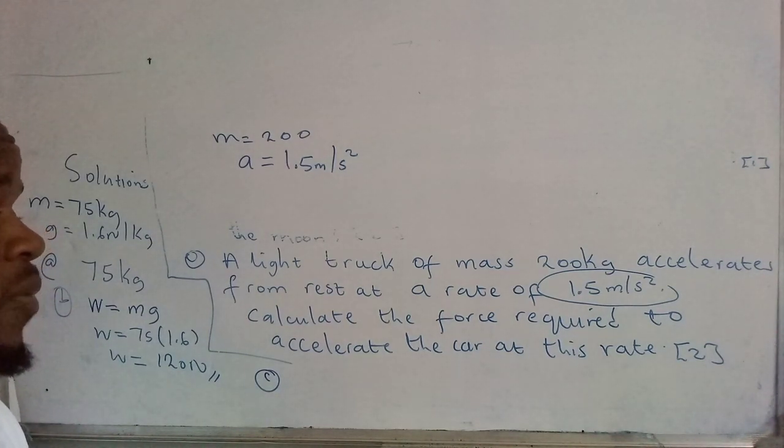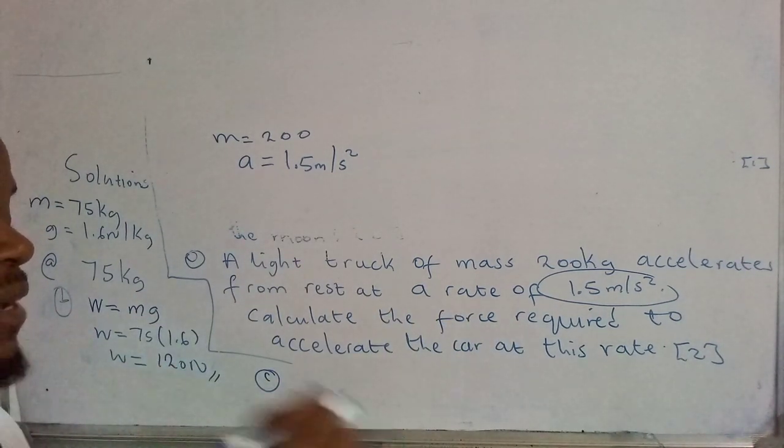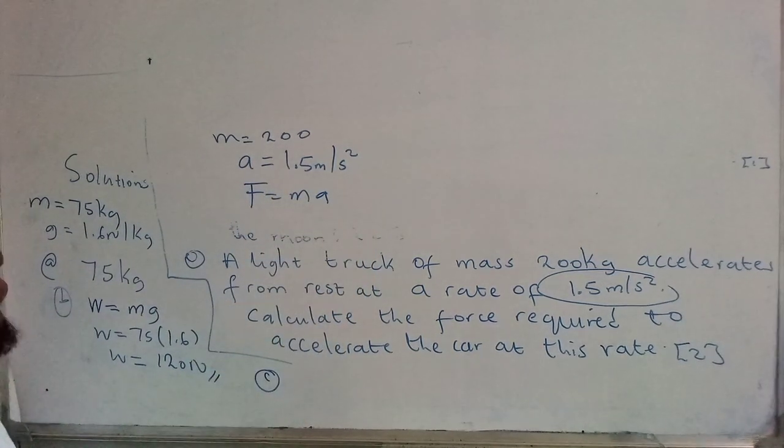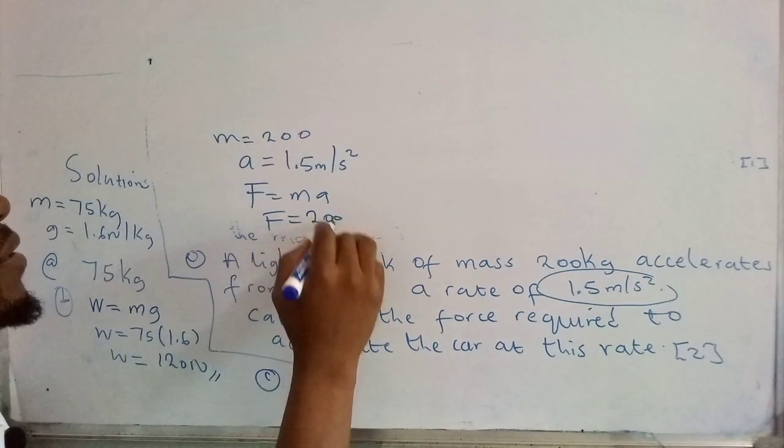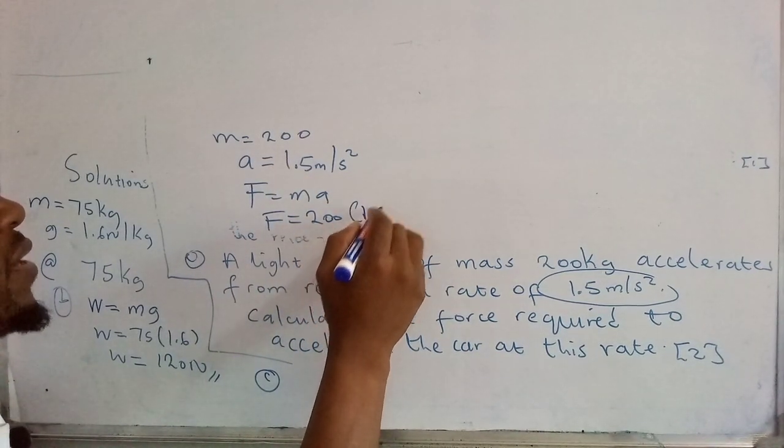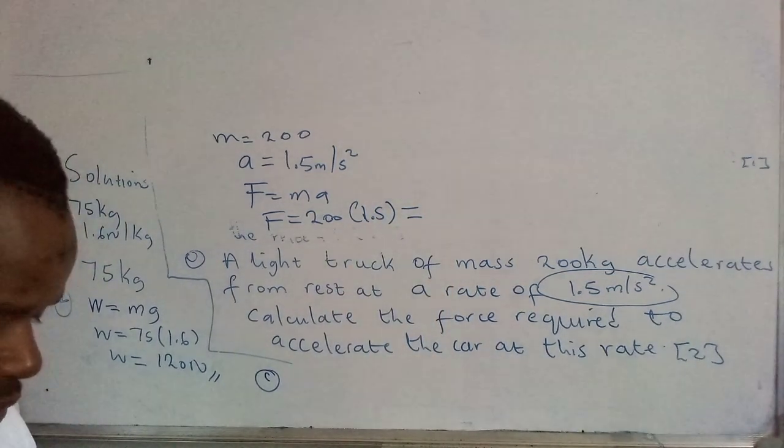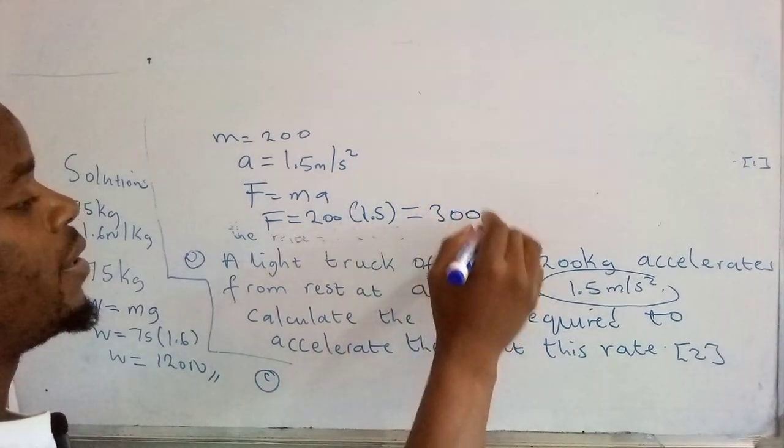Then determine what they want you to determine. Calculate the force required to accelerate the car at this rate. Force is given by mass times acceleration. So all we need to do is plug in the values. What's the mass? 200. And the acceleration is 1.5, which equals... So 200 times 1.5 gives us 300, 300 newtons.